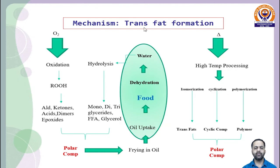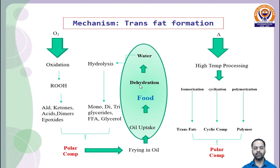Trans fat formation occurs when fats are exposed to high temperature in the presence of oxygen. Oxidation produces peroxides and hydroperoxides, which shift to aldehydes, ketones, acids, dimers, and epoxides — polar compounds. When food is fried in oils containing these polar compounds, oil uptake in food increases. High-temperature processing also causes isomerization, cyclization, and polymerization, all contributing to trans fat formation.